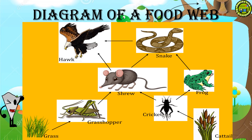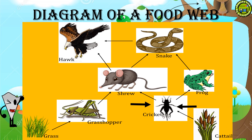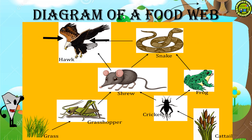Diagram of a food web. Kids! This is the diagram of a food web. This is grass. Grass is eaten by the grasshopper. The grasshopper is eaten by the shrew. And the shrew is eaten by the snake and the hawk. Look at the cattle. The cattle is eaten by the cricket. And the cricket is eaten by the frog. The frog is eaten by the snake. And the snake is eaten by the hawk.